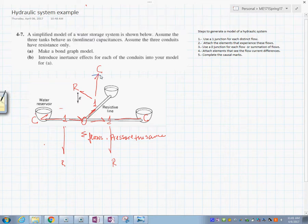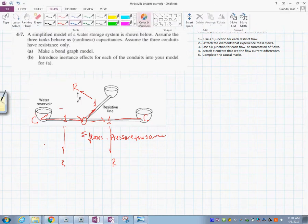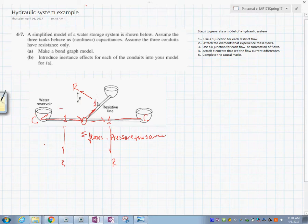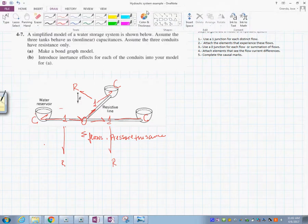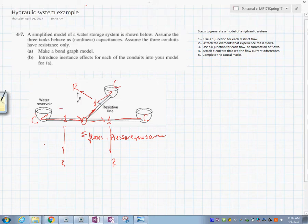Let's assign integral form for the C element. You could put the integral form for the C's. You could put the integral form for this. And you see the rest of it is red because we don't have a way to complete the causal marks.